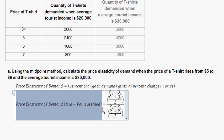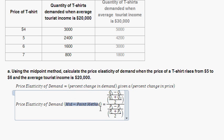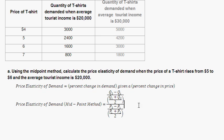Why the midpoint method? When you calculate the percent change, depending on whether you compare it to an initial starting point or where the price ends up, you might get a different number for percent change in demand. The midpoint method is one way of settling how to calculate these percent changes in either demand or price. Simply put, there are different ways to calculate percent change, and the midpoint method balances out possible issues with those different approaches.